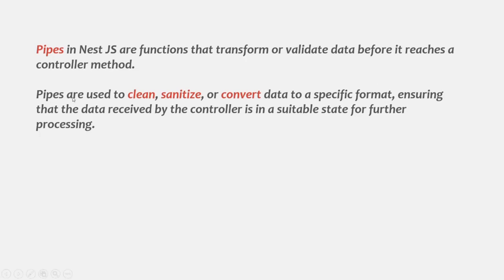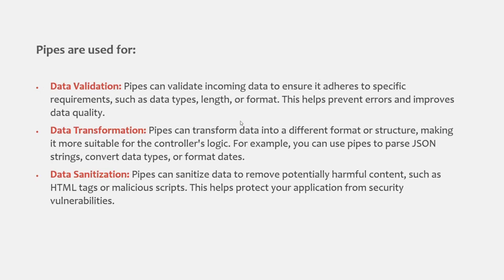What is the function of a pipe? It basically transforms or validates the data coming with the request. In our previous lectures we learned that with the request we can also pass data to the server using route parameters, query strings, or the request body. We can validate or transform that data using pipes before it reaches the controller. Pipes are used to clean, sanitize, or convert data to a specific format, ensuring the data received by the controller is in a suitable state for further processing.